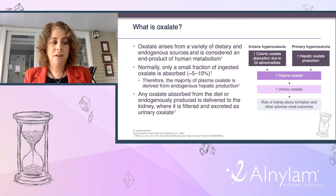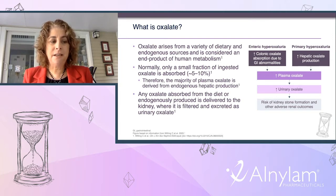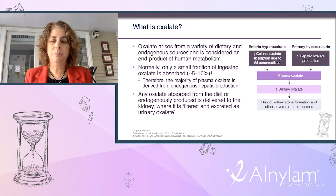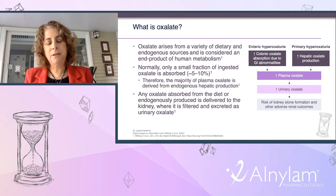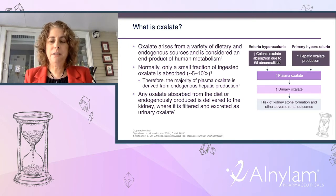In enteric hyperoxaluria, there is increased colonic absorption due to GI abnormalities resulting in malabsorption. Malabsorption leads to increased delivery of fat to the colon, where it binds dietary calcium, decreasing the ability of dietary calcium to bind gut oxalate, so increased soluble oxalate is absorbed. Bile salts and fatty acids also increase intestinal permeability, further facilitating oxalate absorption into the blood, increasing plasma oxalate, which is excreted into the kidney, raising urinary oxalate and kidney stone risk.